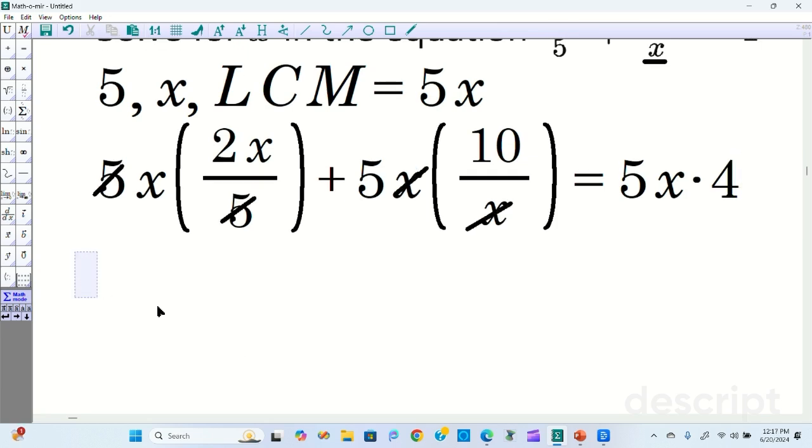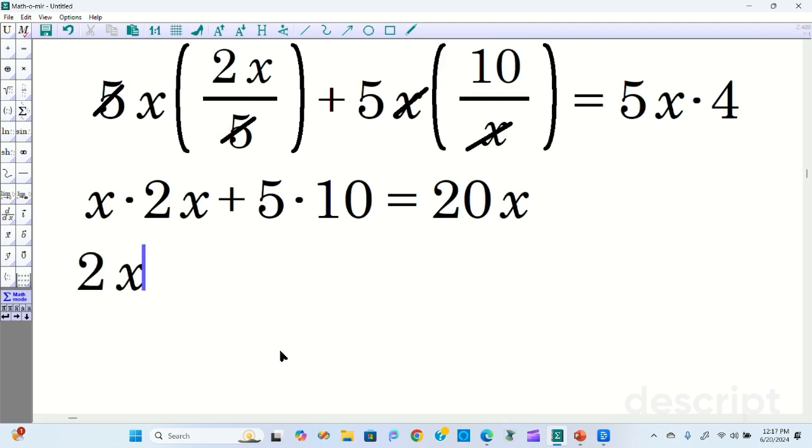Now simplify what you can. So what you have is x times 2x, because the fives are gone, plus 5 times 10 equals 5x times 4 is going to be 20x. So x times 2x is 2x squared. 5 times 10 is 50. This is 20x right here.